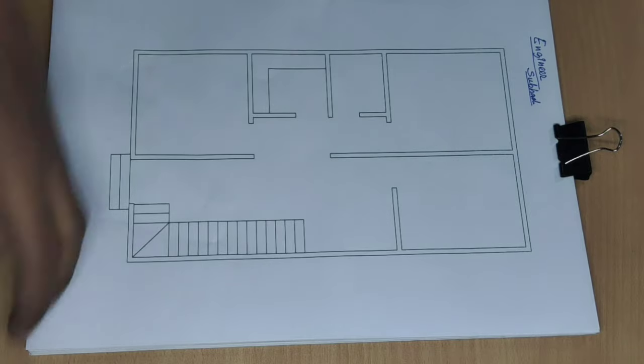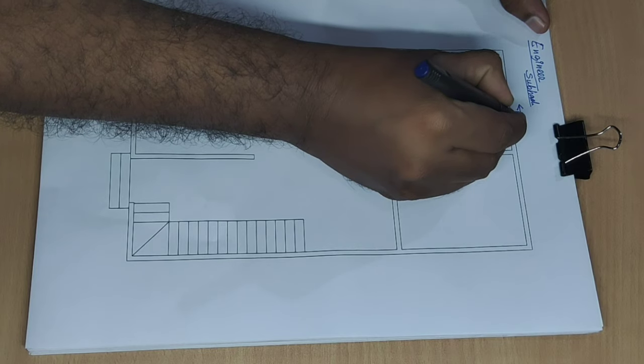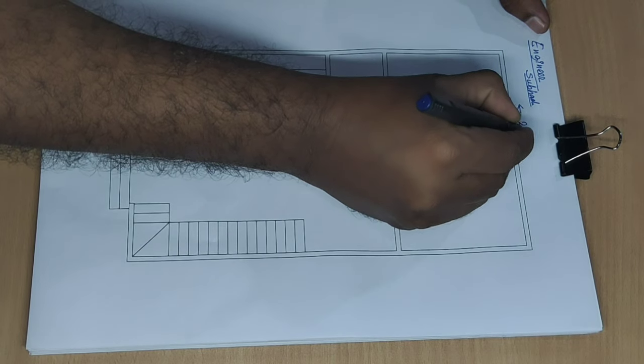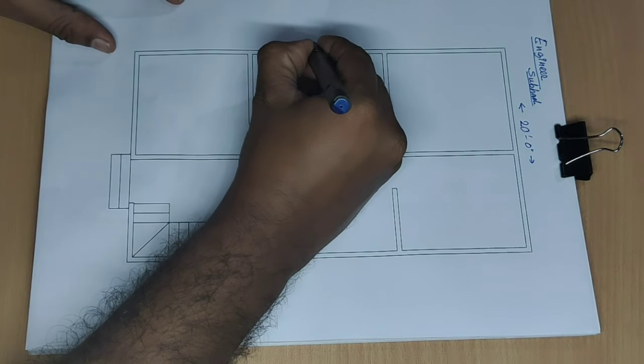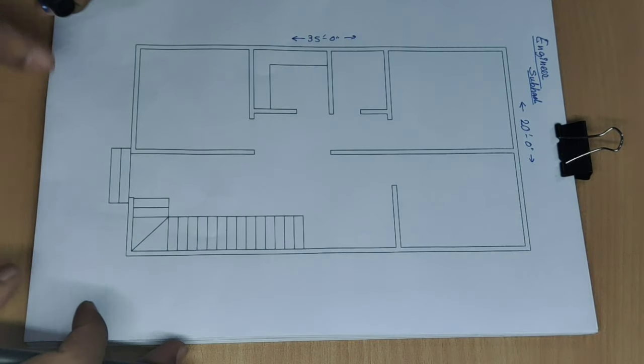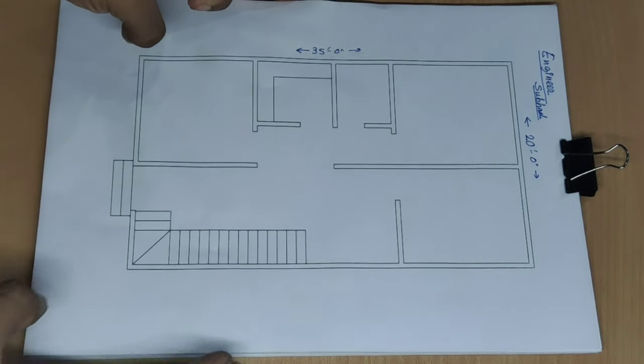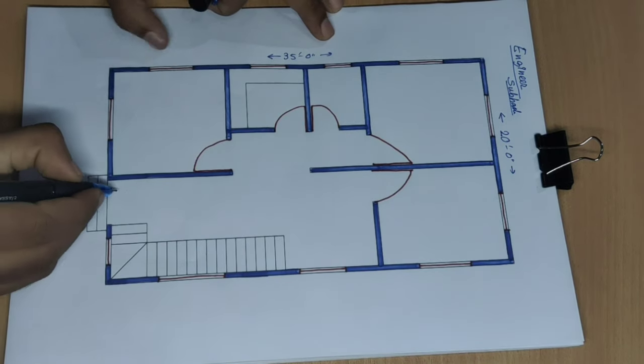20 feet by 35 feet house building plan. Starting with door, window, and wall. Front side main gate.